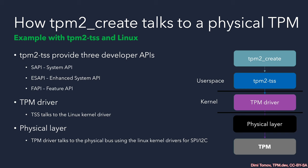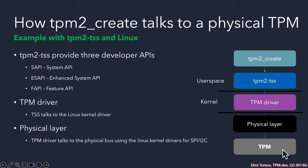Here is an example of how the TPM2Create tool works under Linux to talk to a physical TPM. The TPM2Create tool uses the SAPI of the TPM2 TSS stack. The stack in turn talks to the Linux TPM driver. The command is then sent over the physical layer using the Linux drivers for SPI or I2C and reaches the TPM. When the TPM is ready, it sends back a response that is handled first by the Linux driver and then passed to the stack. The stack, once done unmarshalling the result, returns the data to us.